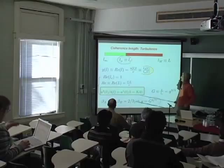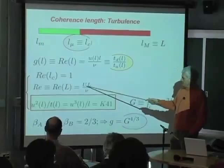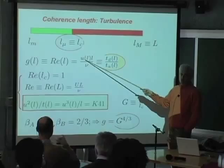I also told you that when people talk about Reynolds number in general, what they mean is the Reynolds number at the larger scale. And these two conditions are not enough. We have to supplement them with an expression which tells you how the velocity field is changing scale by scale.